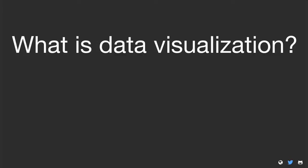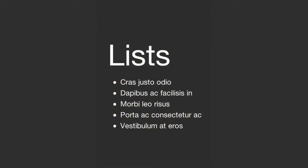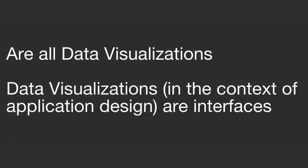So what is data visualization? According to Wikipedia, data visualization is the study of visual representation of data, meaning information that has been abstracted in some schematic form, including attributes or variables for the units of information. Based off of that very vague definition, you can think of lists as a visualization, tables as a visualization, or even tabs. These are just what most people think of as interfaces. Data visualization in the context of application design is, in many ways, an interface component or an interface paradigm.